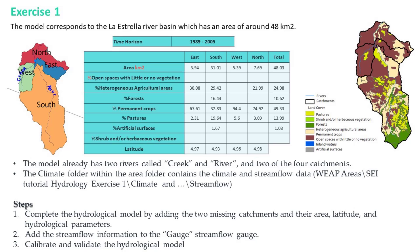Areas in square kilometers and percentage distribution by land cover classes in each catchment are shown in the table. The table also shows the centroid latitude of the polygons representing catchments. The model already has two rivers called creek and river, and two of the four catchments. The climate and stream flow data are in the model folder within the WIB areas folder. We will need to complete the hydrological model by adding the two missing catchments, then enter their area, latitude, and hydrological parameters.